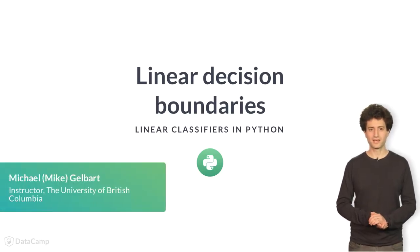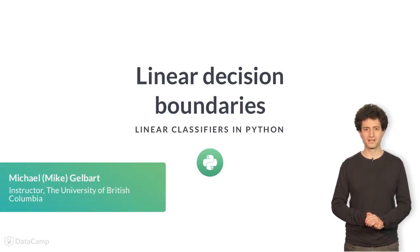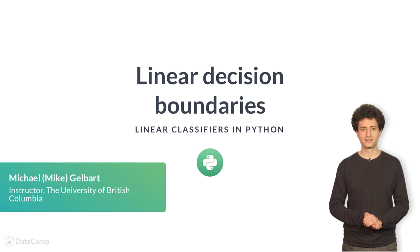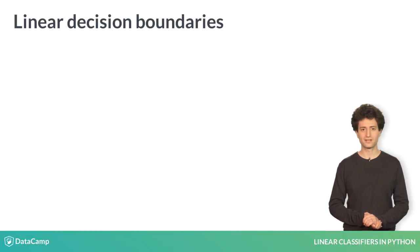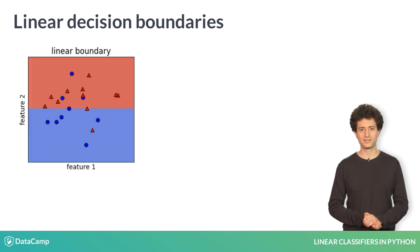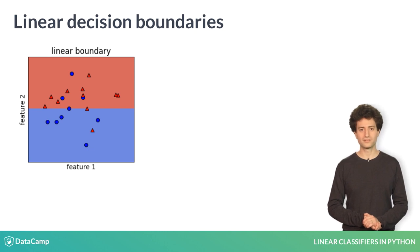In this video, we'll discuss what it means for a classifier to be linear. A decision boundary tells us what class our classifier will predict for any value of x. In this image, the classifier predicts the blue class in the blue shaded area, where feature 2 is small, and the red class in the red shaded area, where feature 2 is large. The dividing line between the two regions is called the decision boundary.